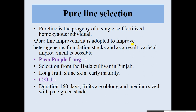The first method is pure line selection. A pure line is the progeny of a single self-fertilized homozygous plant or homozygous individual. Pure line improvement is adapted to improve heterozygous or heterogeneous foundation stocks, and as a result, further improvement is possible.